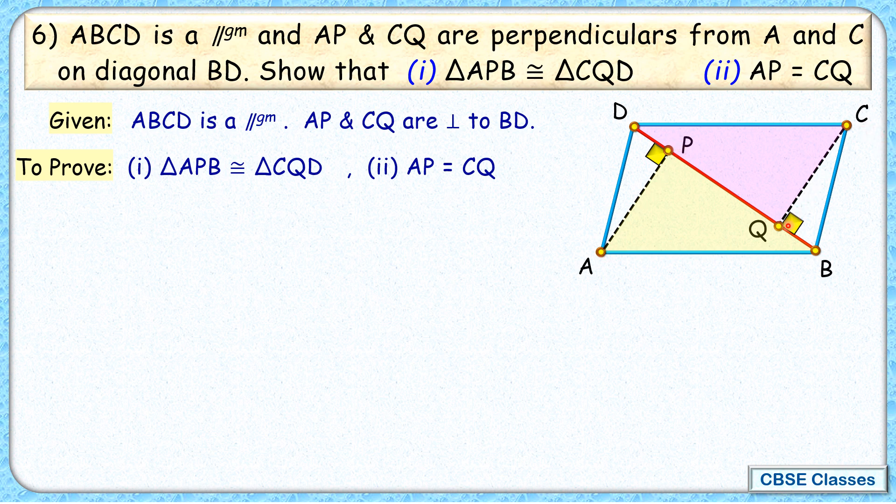Let's check the proof. We will consider these two triangles. In triangles APB and CQD, first thing is this angle ABP, that is this angle, is equal to angle CDQ, that is this angle. Why are they equal? Because AB and CD are parallel to each other and these angles are alternate interior angles.